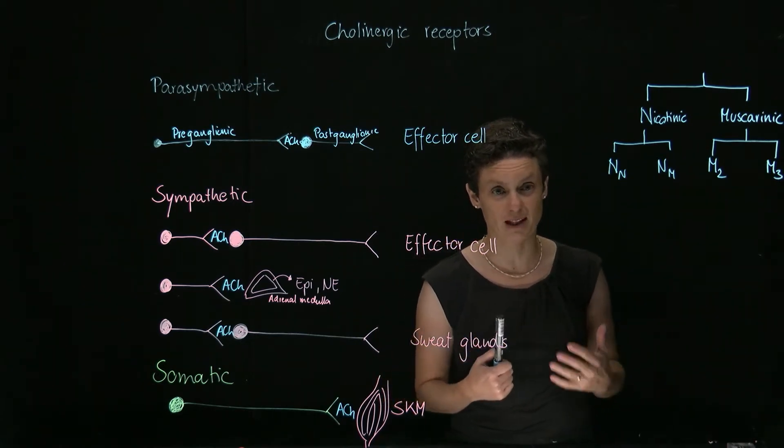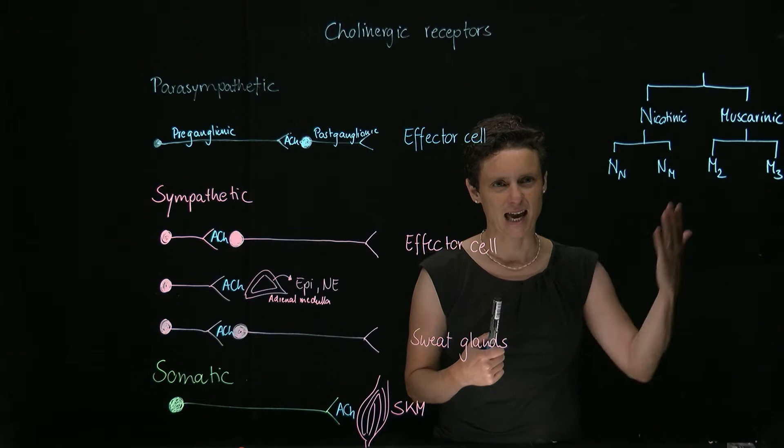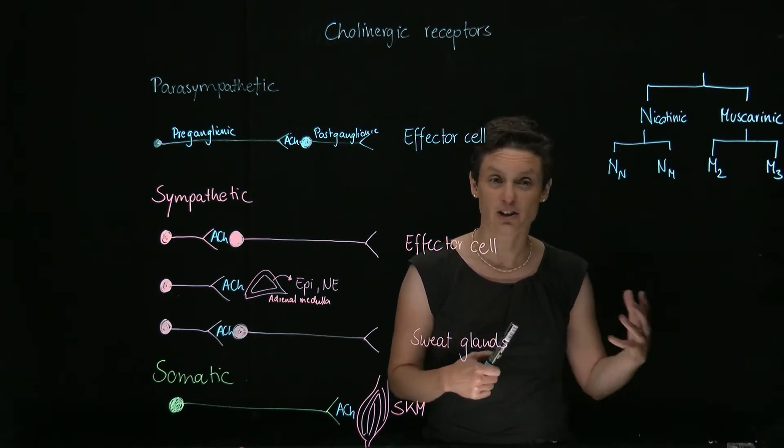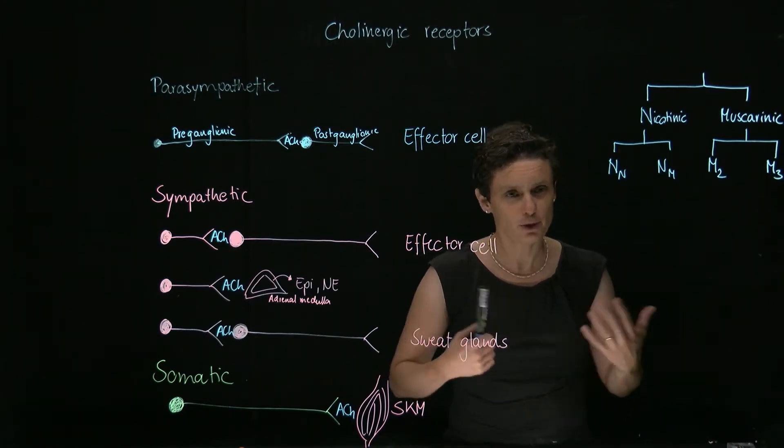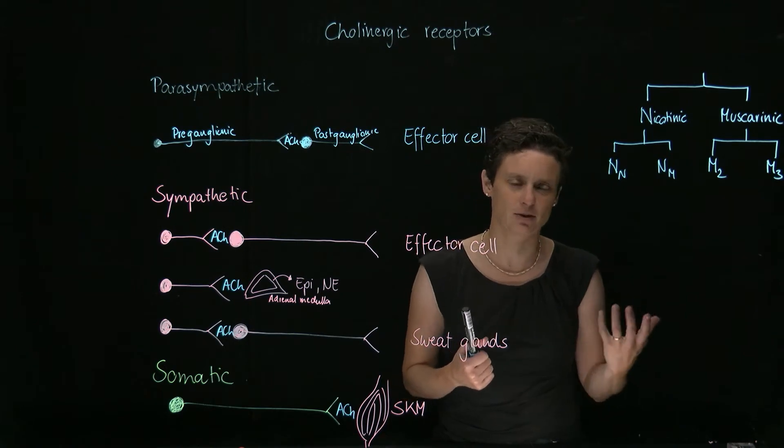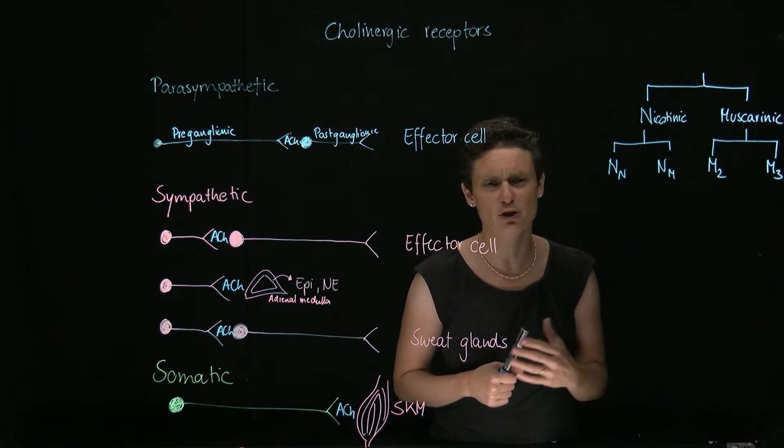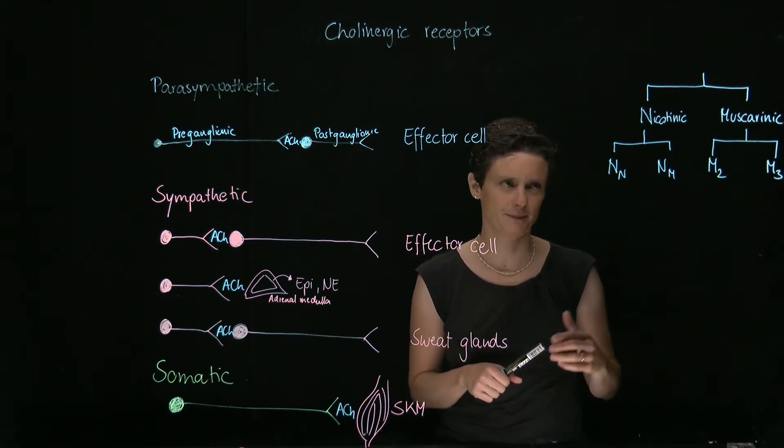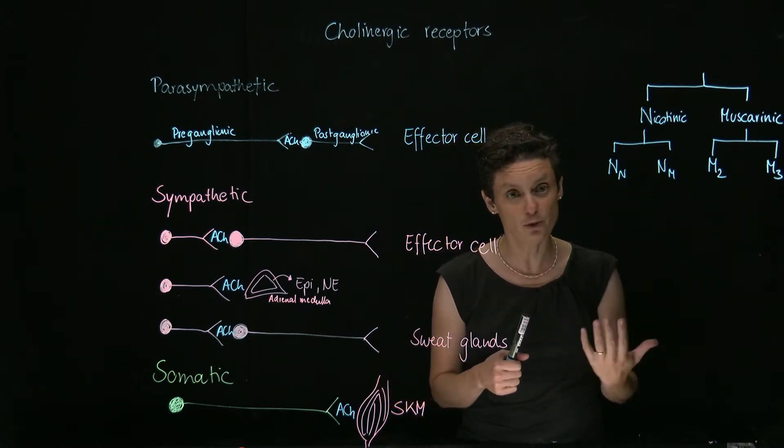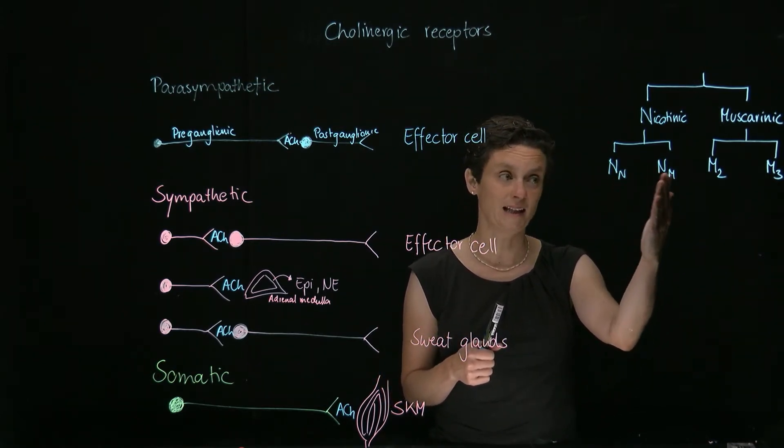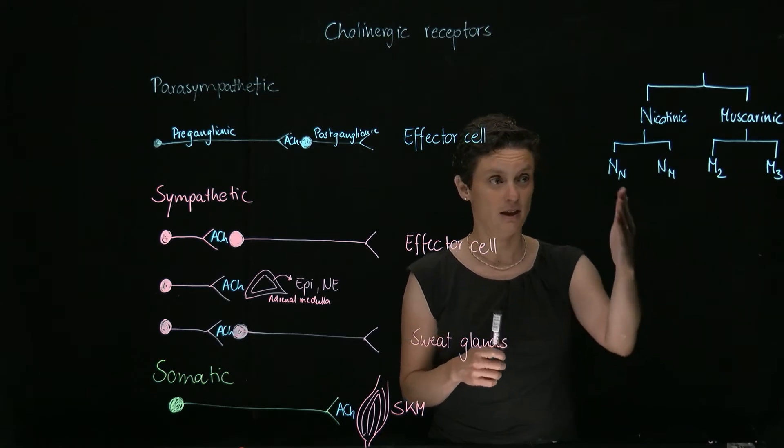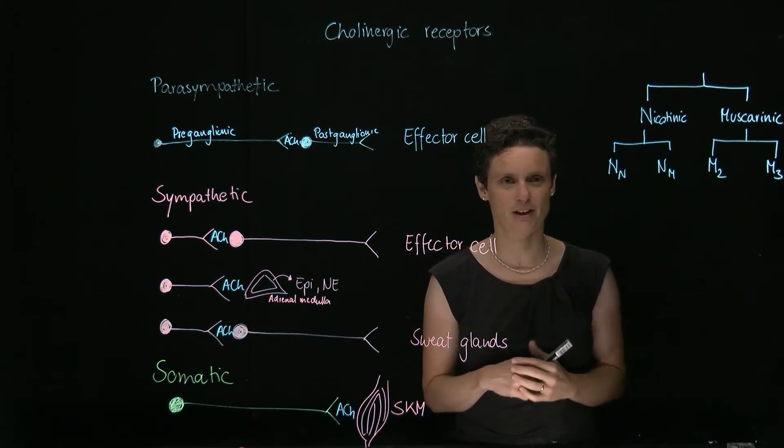The nicotinic receptors are ligand-gated ion channels, and the muscarinic receptors are G-protein-coupled receptors, which is pretty interesting that you have acetylcholine as a molecule working on such different receptor types. The nicotinic come in two flavors: there's nicotinic neural and nicotinic muscular, so NN and NM receptors.